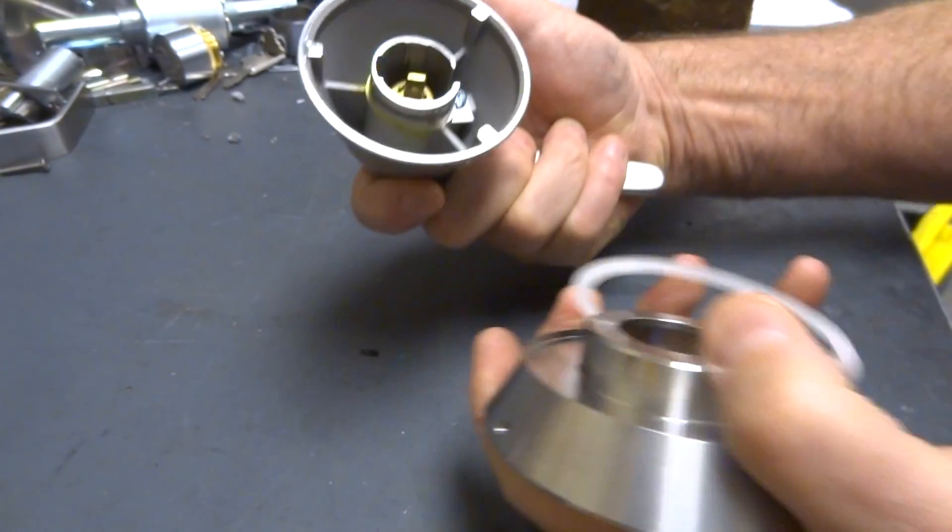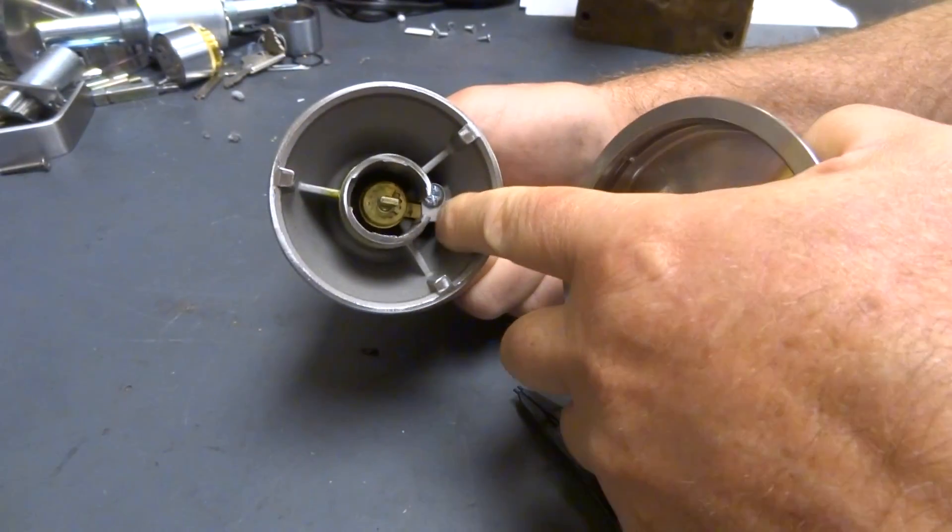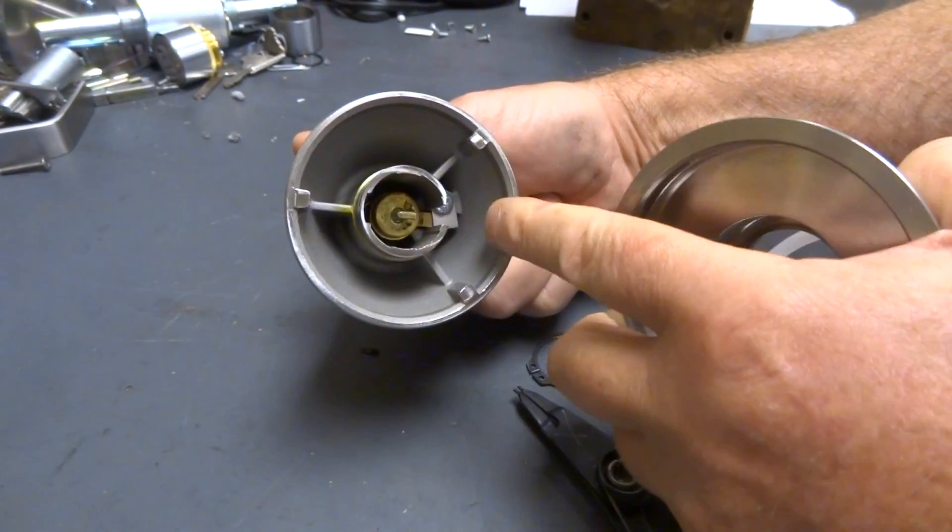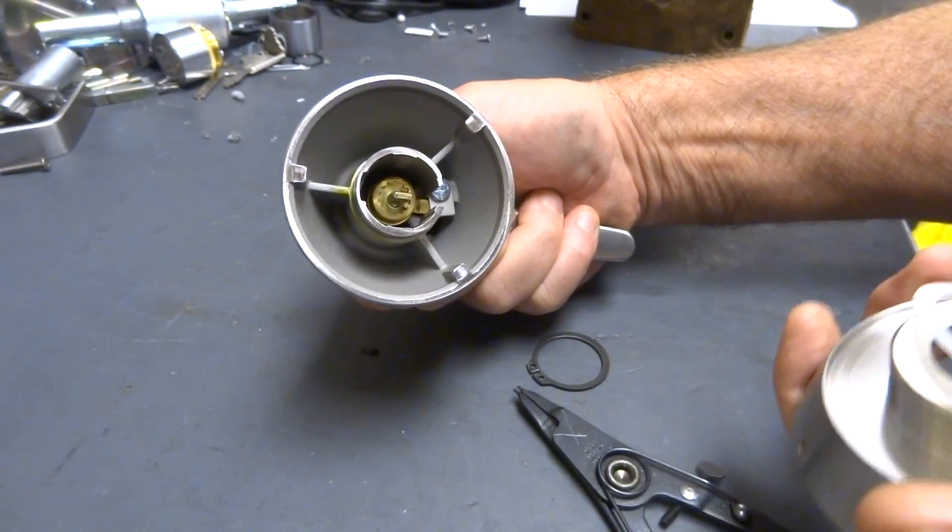Remove this, and there's a little screw with a little washer to hold the cylinder. Take out the screw and take out the cylinder.